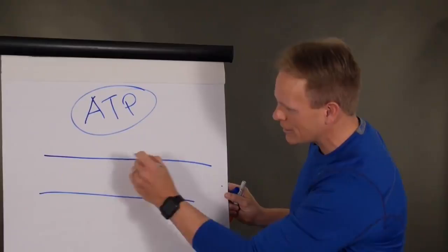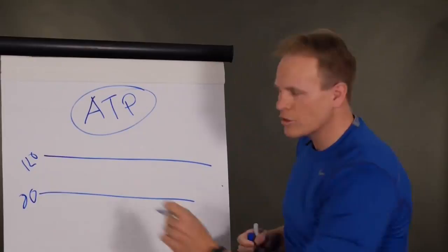So the two numbers you need to know, and this is your blood sugar levels, 120 and 80. 120 and 80, just remember those.